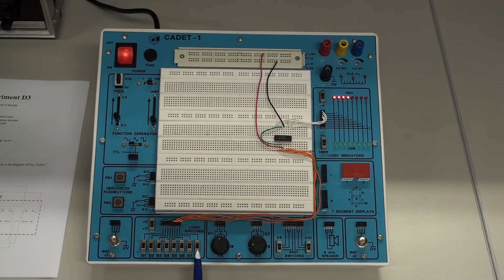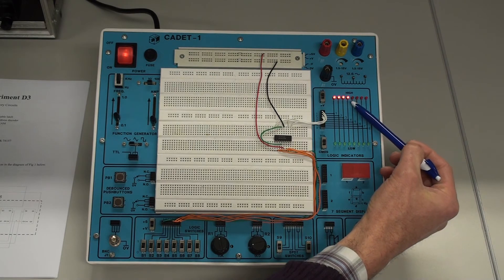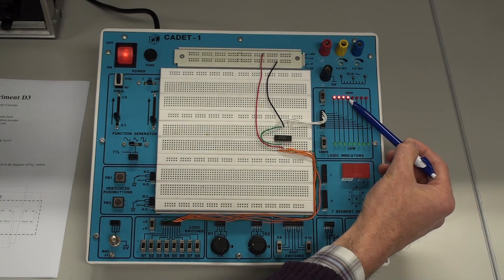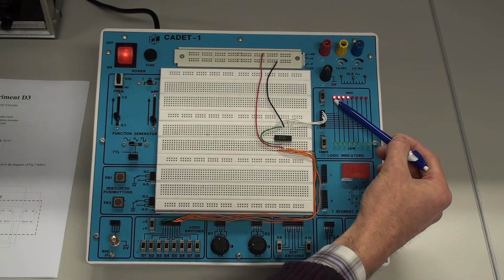And in this case, this is going to be the least significant bit of the input. And this one here being the most significant bit. And the same on the output here. This is the least significant bit here. And this is the most significant bit.